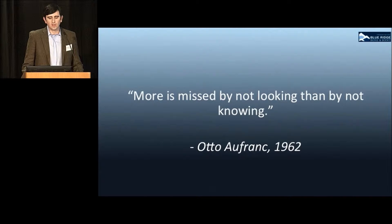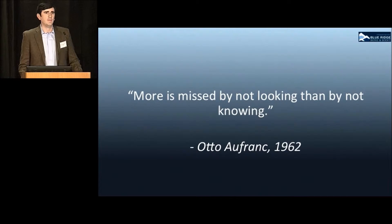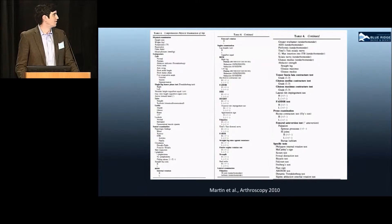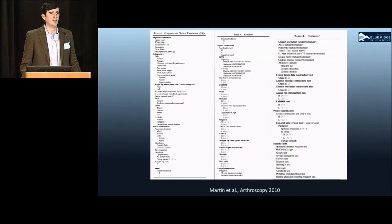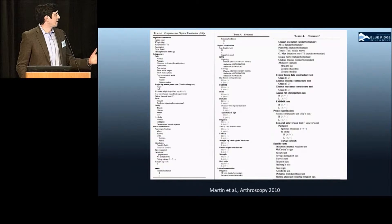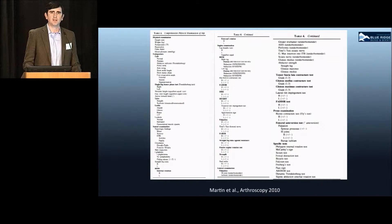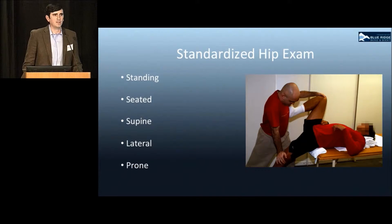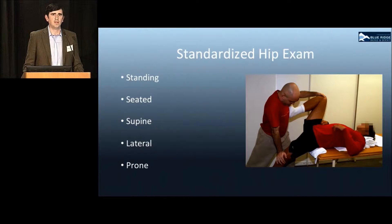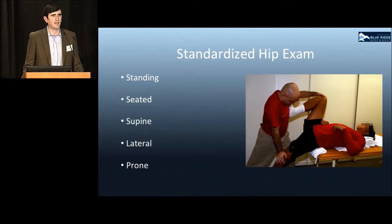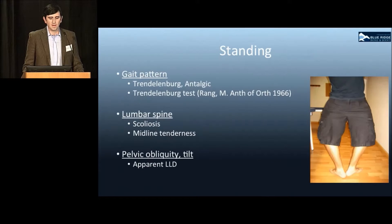It's been said about the hip that more is missed by not looking than by not knowing, and authors such as Hal Martin and others have taught us what to look for and what tests to use. Looking at a comprehensive examination of the hip, this is quite daunting to perform in a limited amount of time in clinic. The best approach is a standardized process going from standing to seated, to supine, to lateral, and finally to prone.